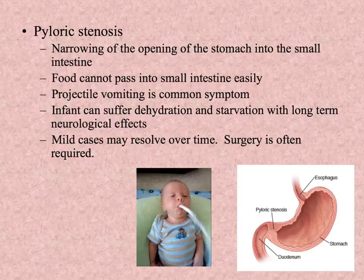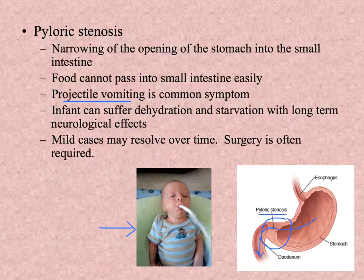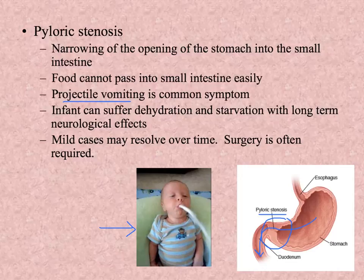The first malformation I want to talk about is pyloric stenosis, which is a narrowing of the stomach into the small intestine. If the pyloric sphincter muscles have grown larger than they should — hypertrophy — then the hole for food to pass from the stomach into the duodenum is not large enough. The clear sign is projectile vomiting, not just spitting up, but like a fire hose being turned on, potentially going two meters or six feet from the child. A more serious problem would be a child suffering dehydration and even starving because they can't get enough food into their intestine where nutrients can be absorbed.